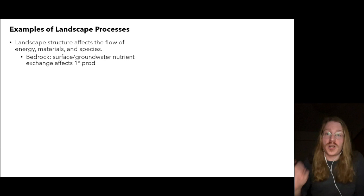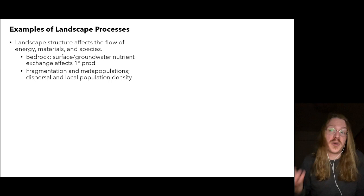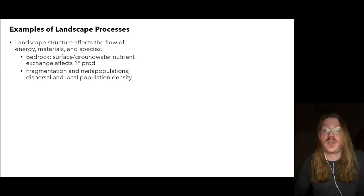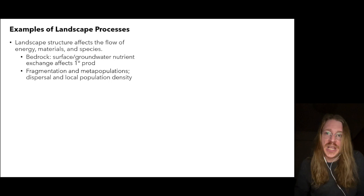The structure of a landscape affects the flow of energy, materials, and species. For example, bedrock influences how nutrients move from surface to groundwater, which in turn affects primary productivity. The degree of fragmentation within a landscape affects population dynamics — sources versus sinks, or metapopulation dynamics. The arrangement and interconnectedness of patches affects dispersal, while patch size and composition or quality affects local population density.